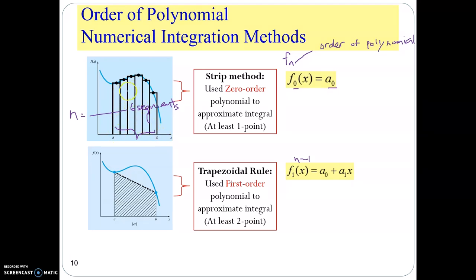For example, if you count 1, 2, 3, 4, 5, 6 — you have 6 segments, so n equals 6. In the other graph, you have one segment only, so n equals 1. There are two different meanings for the n symbol here: the order of the polynomial and the number of segments. Please don't confuse them.